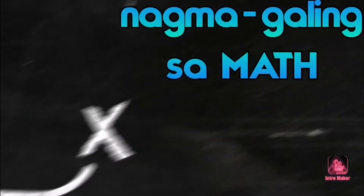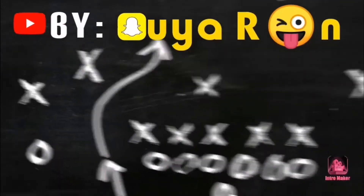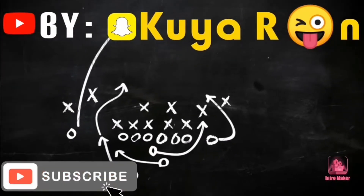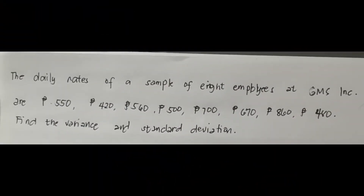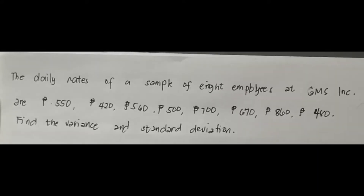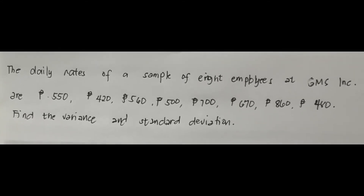Let's have our example. We're talking about measure of dispersion — specifically, variance and standard deviation. Here I have an example. This year, the daily rates of a sample of 8 employees at GMS Incorporated are P550, P420, P560, P500, P700, P670, P860, and P480. We'll talk about measure of variability or dispersion — the spread of data. Data is measured in terms of standard deviation: how many standard deviations a particular observation or score is away from the center, or mean.